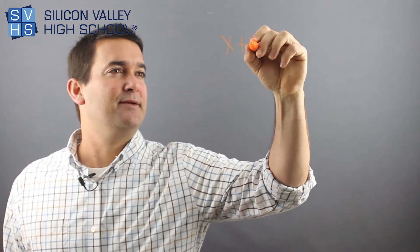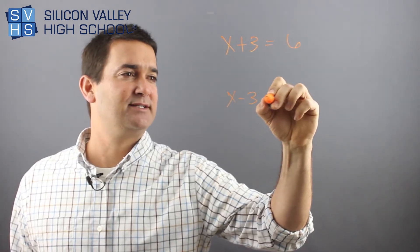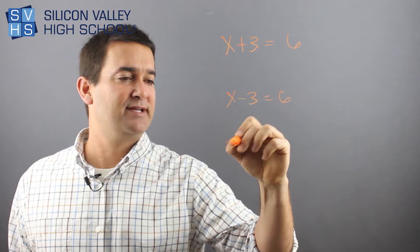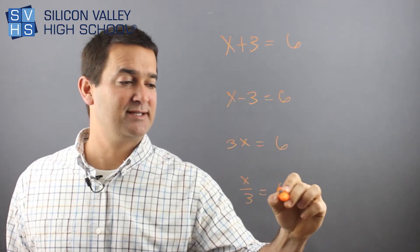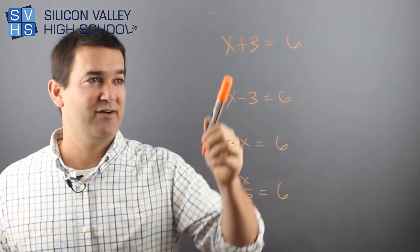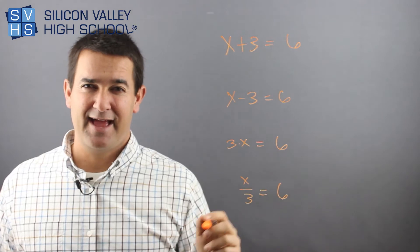You could have x plus three equals six, x minus three equals six, three times x equals six, and x divided by three equals six. Those are the four basic operations: plus, minus, times, and divide.